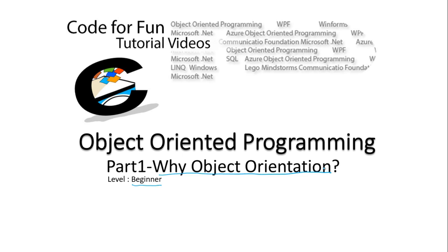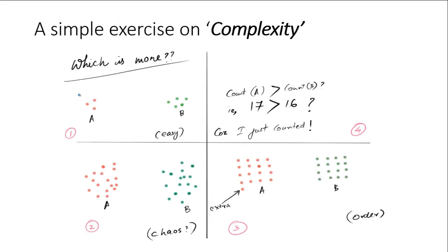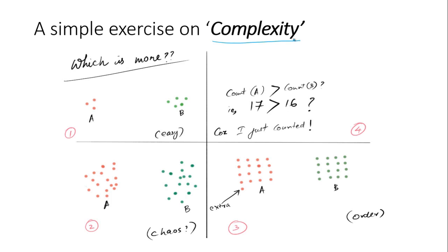Let's start with an example, a simple exercise to explain the concept of complexity. In case one, we have two groups containing a certain number of dots. Is it possible to tell which group contains more dots? In case one, it's easier to tell just by looking at them. We understand that group B contains more dots than group A. It's obvious.